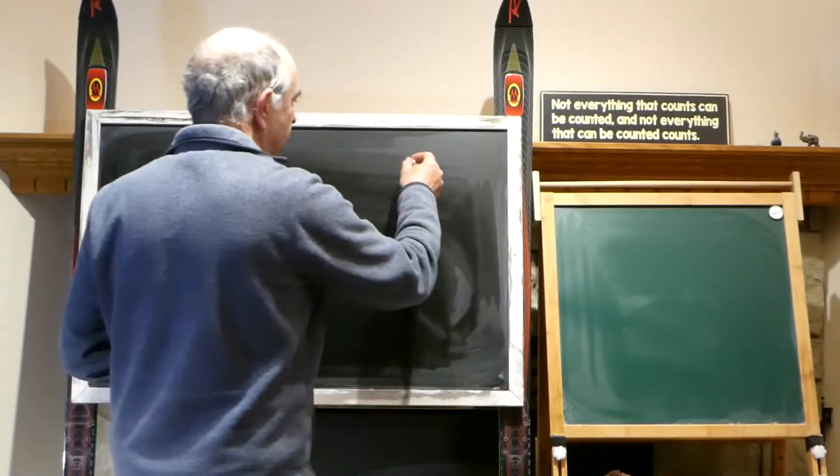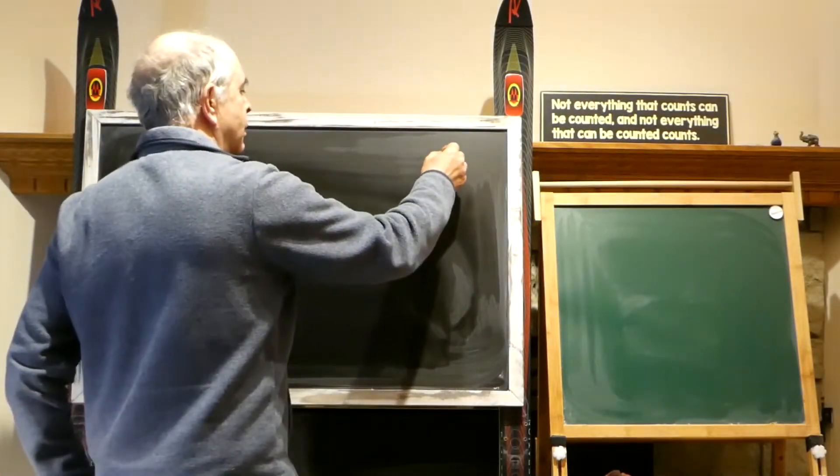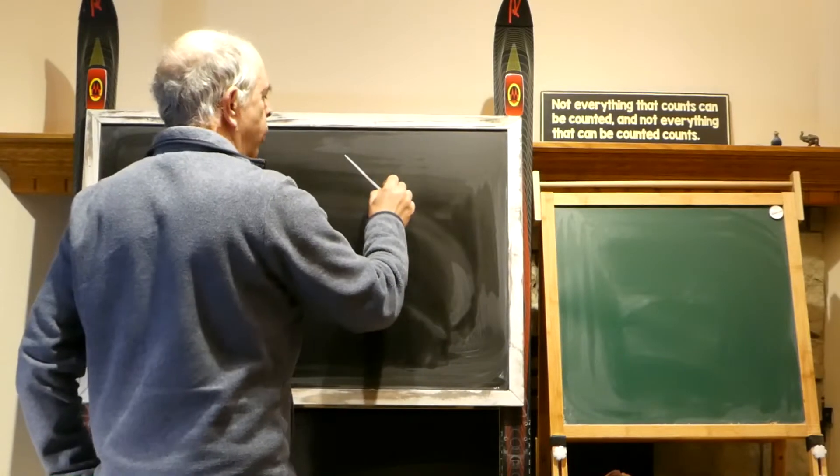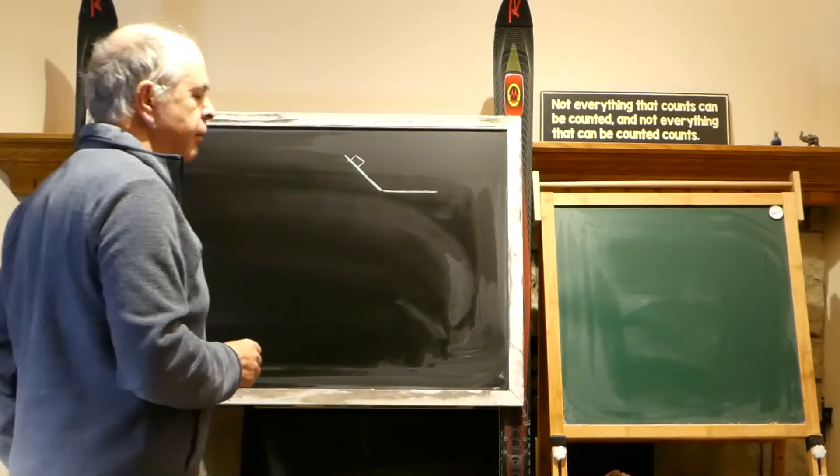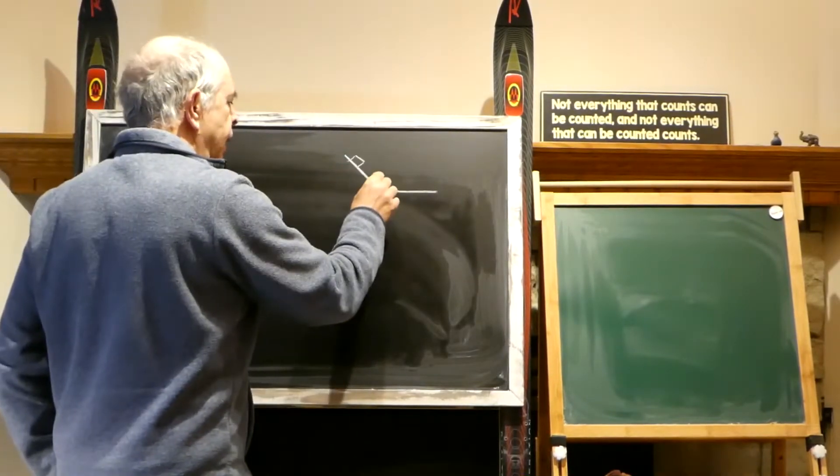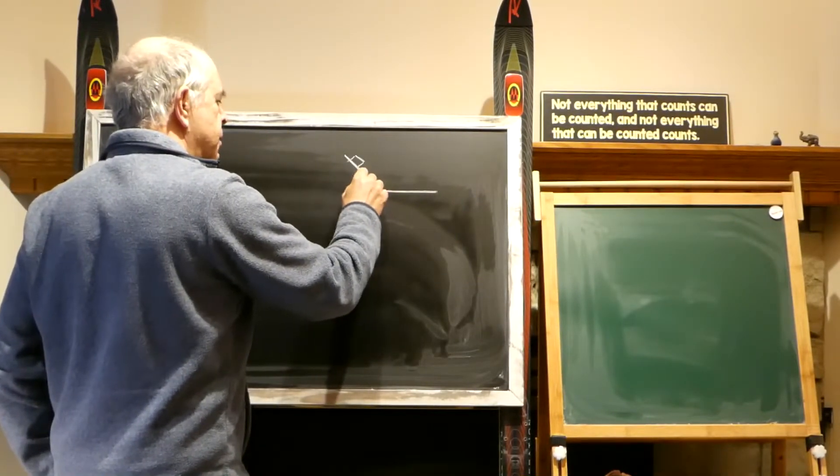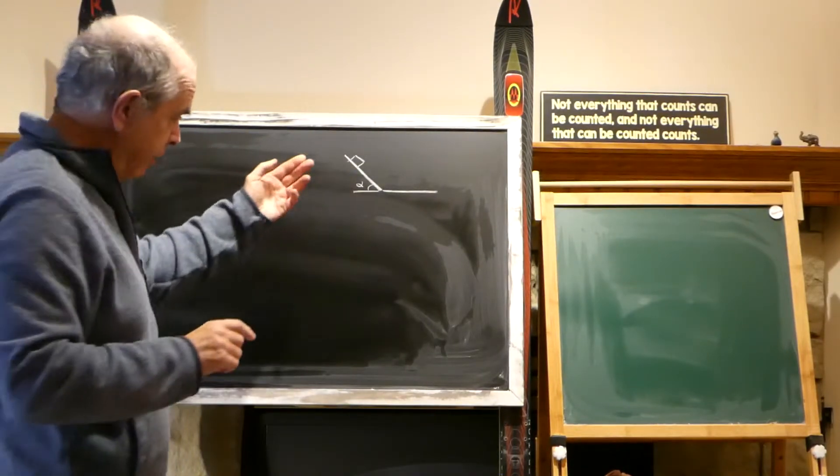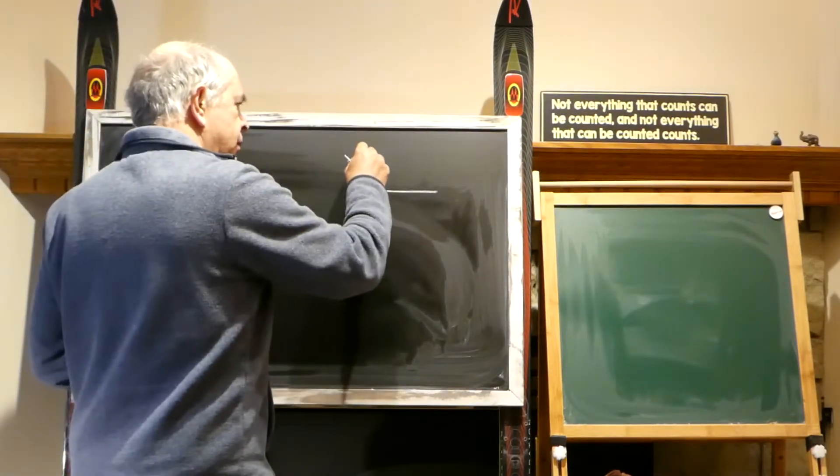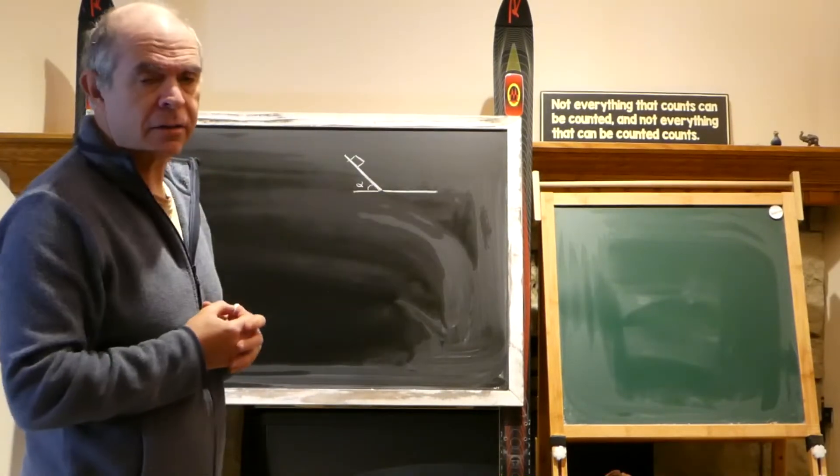Today the problem is about a body on an incline. So this body was on an incline, they told us that the incline is big enough that the body starts to slide, there is friction, but this is kinetic friction.